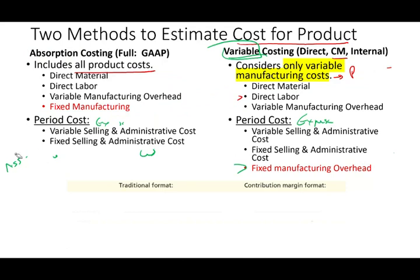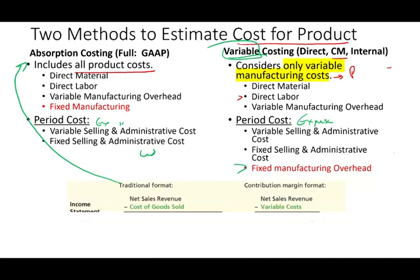The traditional format — absorption costing — takes sales minus cost of goods sold to get gross profit. Under the contribution margin method, we take revenues minus variable costs to get contribution margin, not gross margin. CPA exam questions often ask you to compute contribution margin or gross profit margin.